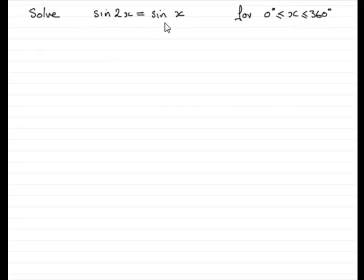So how would we solve this equation? Well the first thing I notice in this particular example is that the angles are not the same. We've got the angle 2x here and the angle x here. But this angle 2x is double this angle x, so that makes me think of the double angle formula so that I can actually reduce this down to the same angle.